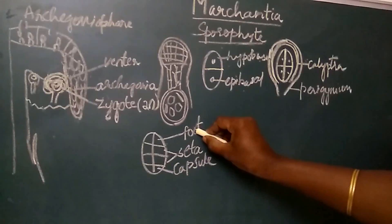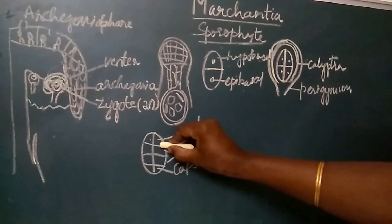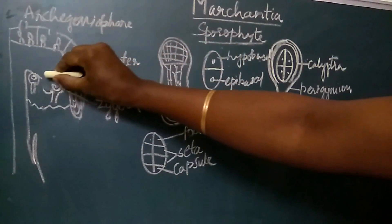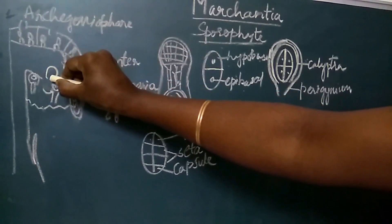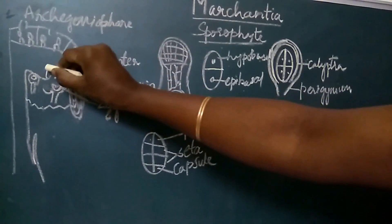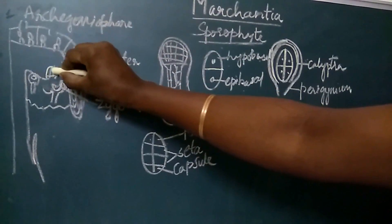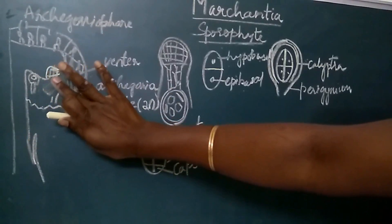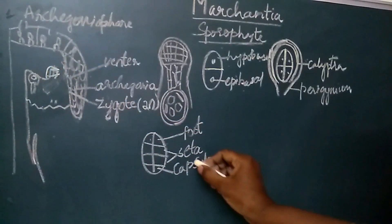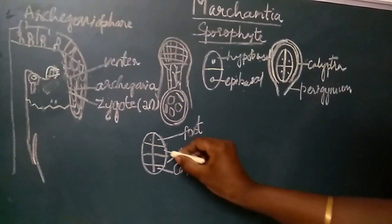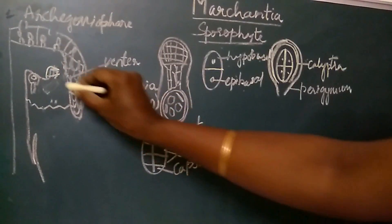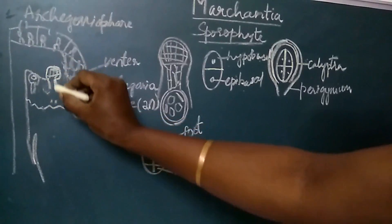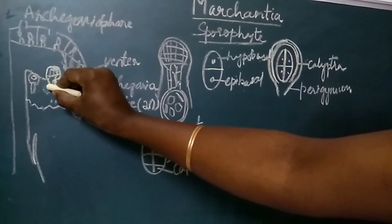The cells which are supposed to become the foot divide a number of times and form a bulbous foot. This bulbous foot gets embedded in the tissue of the archegoniophore. The seta develops from the central cells and is initially small and stout with smaller cells.